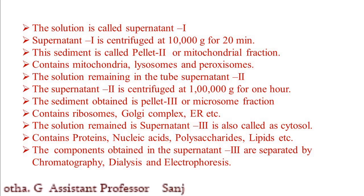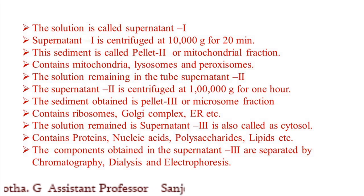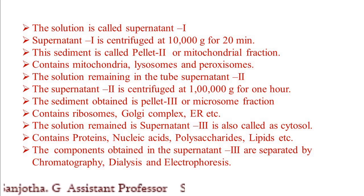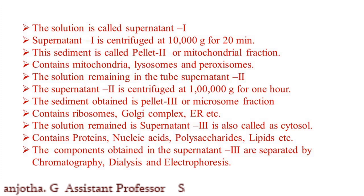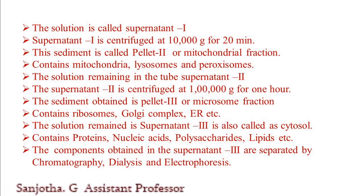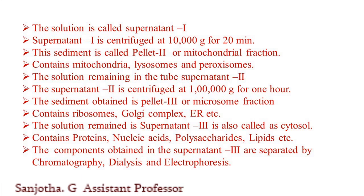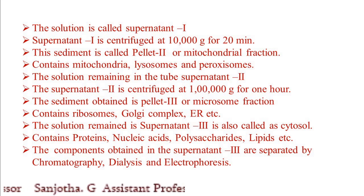Supernatant 1 is again subjected to centrifugation at 10,000 × g for 20 minutes. At this higher speed, a new sediment and supernatant are formed. The sediment obtained in this second step is called pellet 2, also known as the mitochondrial fraction, because it contains mitochondria, lysosomes, and peroxisomes. The remaining solution is called supernatant 2, which is then subjected to centrifugation at 1,000 × g for 1 hour.